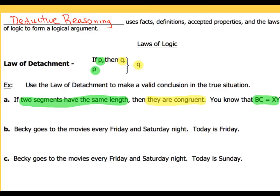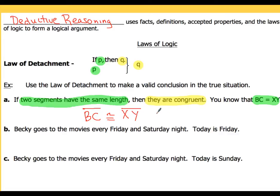So if those two segments have the same length, then I can make the conclusion that BC — because my hypothesis P is 'two segments have the same length, then they are congruent' — and I'm told that BC equals XY, which is the same thing as my initial hypothesis. So I can go ahead and make the conclusion that BC is congruent to XY.